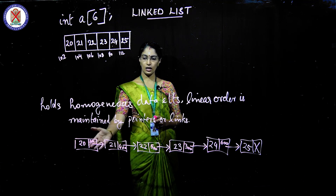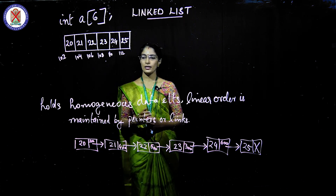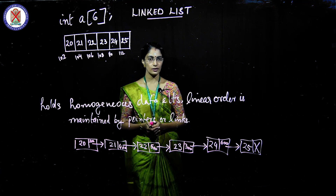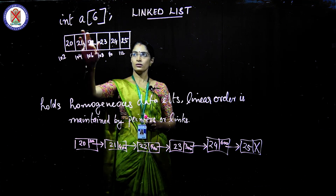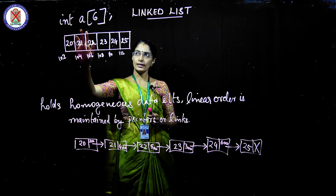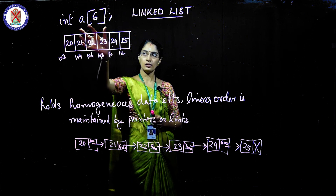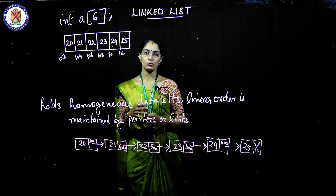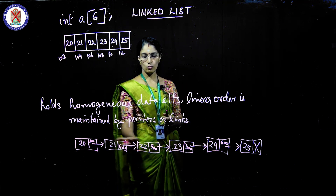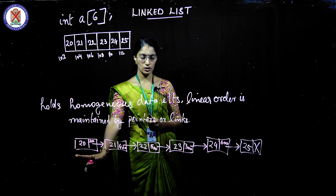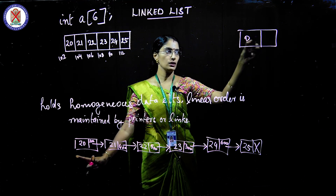Now we will look at the programming side of linked list — how to define a node in a program. In arrays, you define the data type, name, and size. But in a linked list, you need to define the structure of a node. A node has two parts: the data part and the link part. When defining a node, you need to define both these parts. The link part holds the address of the next node.